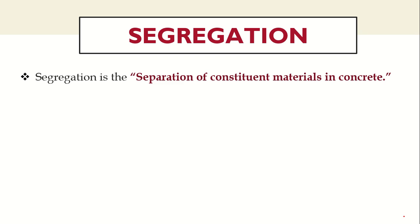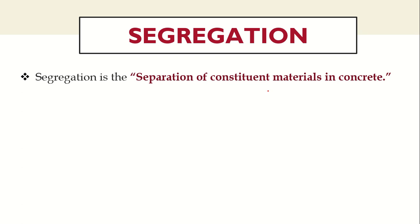Segregation is defined as the separation of constituent materials in concrete. Concrete is made up of some raw materials, and if those materials are no longer a combined mass — if they do not act homogeneously and get separated — that is called segregation. Generally, segregation is of three types.